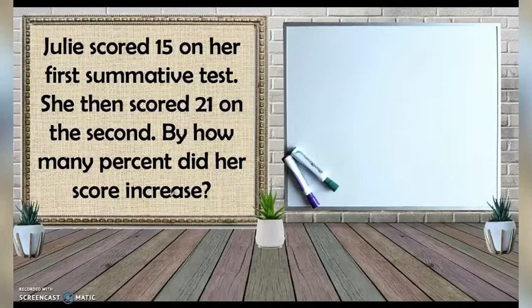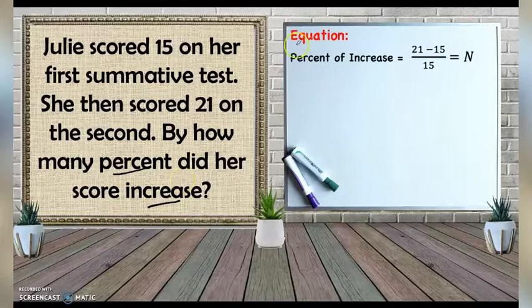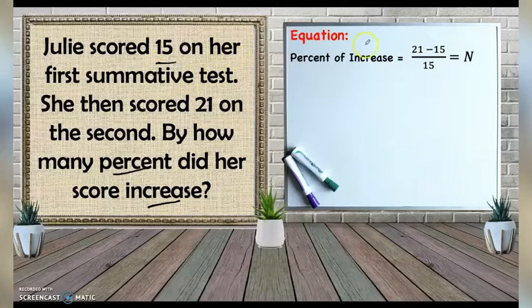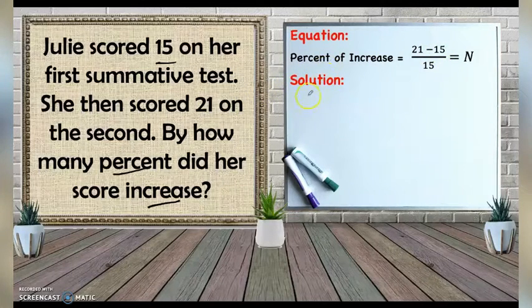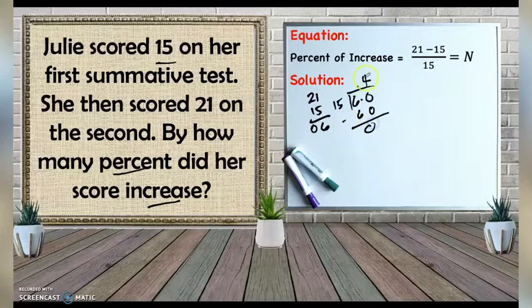Another example: Julie scored 15 on her first summative test and 21 on the second. By how many percent did her score increase? Percent of increase equals amount of increase divided by original value. The original value is 15 and the new value is 21. So: 21 minus 15 equals 6, then 6 divided by 15. Adding a decimal point: 60 divided by 15 is 4, no remainder. The result is 0.4, which equals 40%. Julie's score increased by 40%.